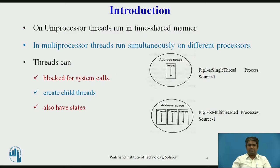Threads share a CPU in the same way as processes do. That is, on a uniprocessor, threads run in timesharing. Whereas on a shared memory multiprocessor, as many threads can run simultaneously as there are processors.